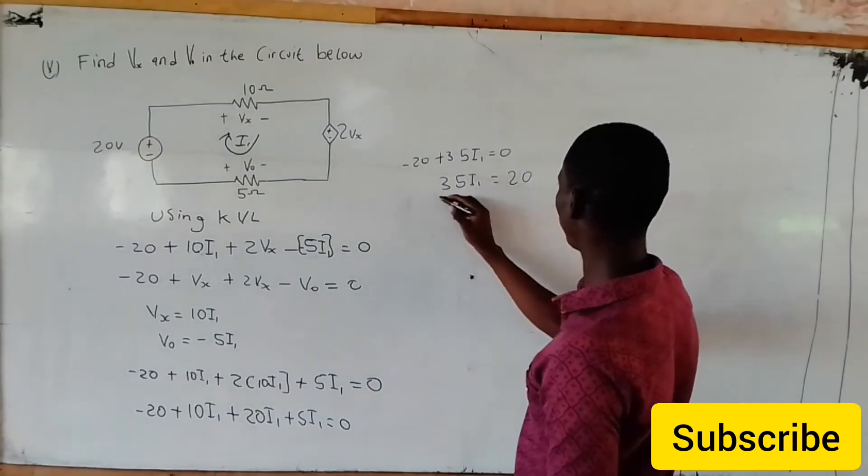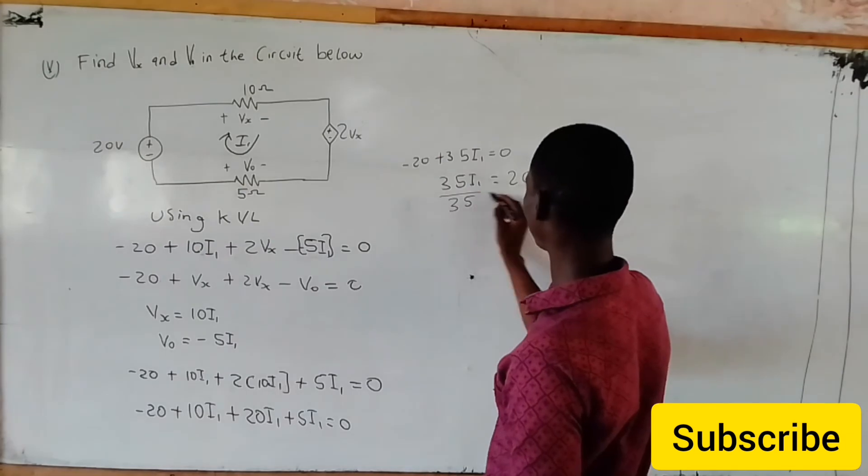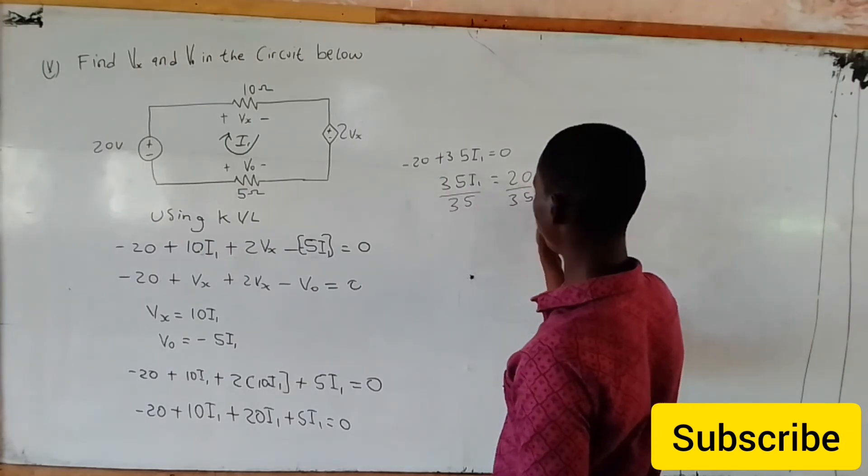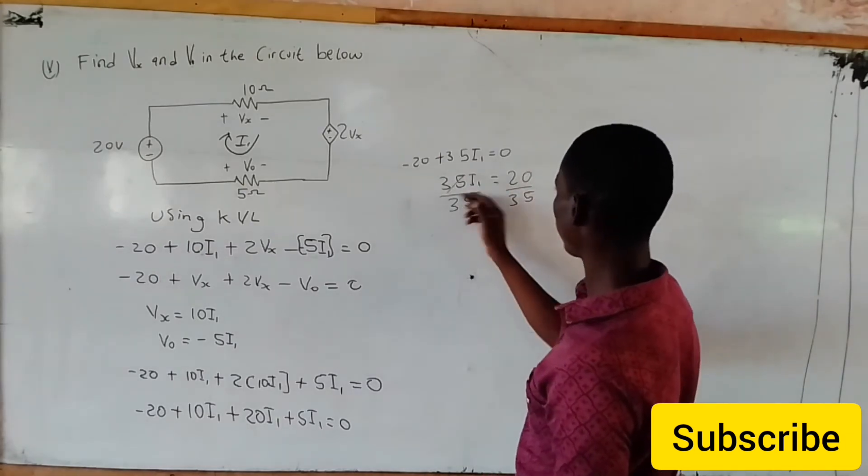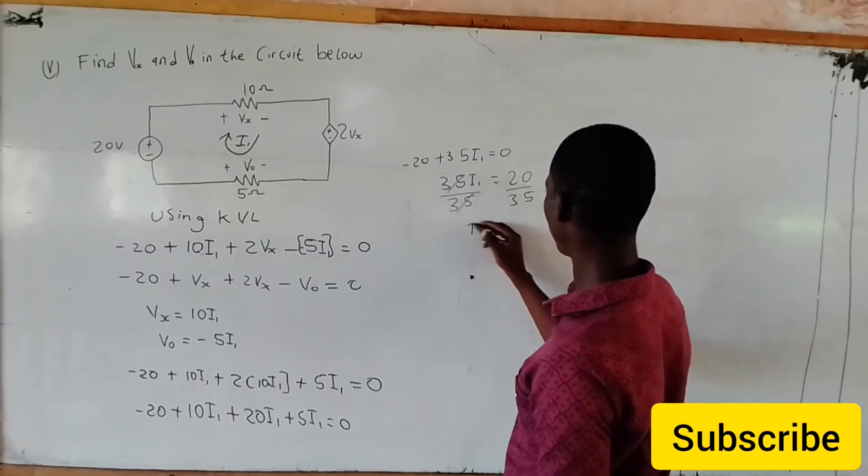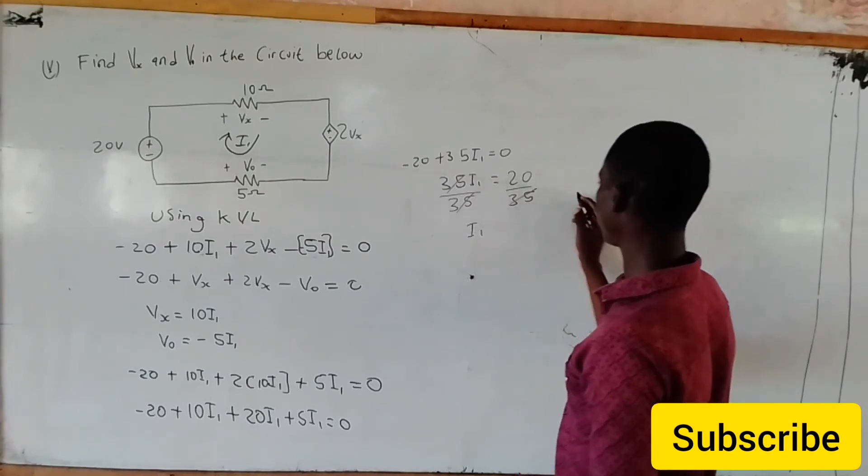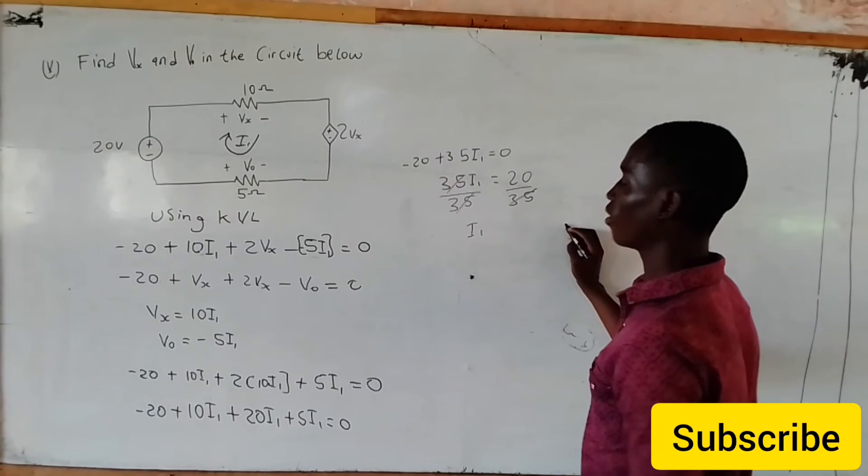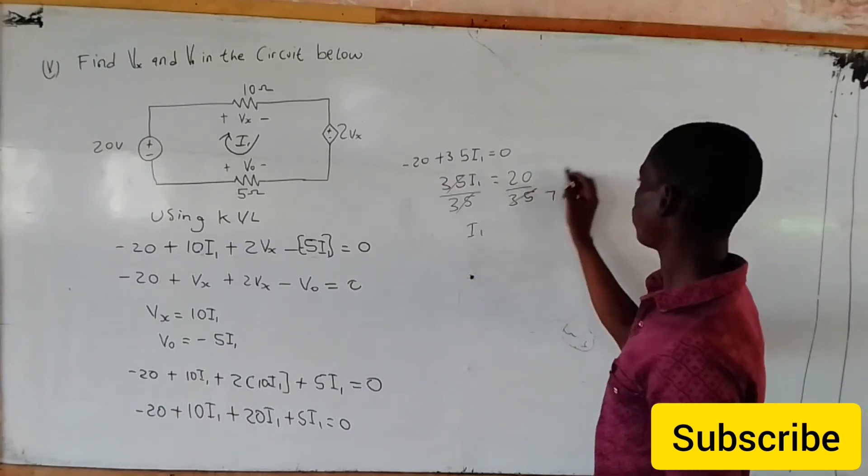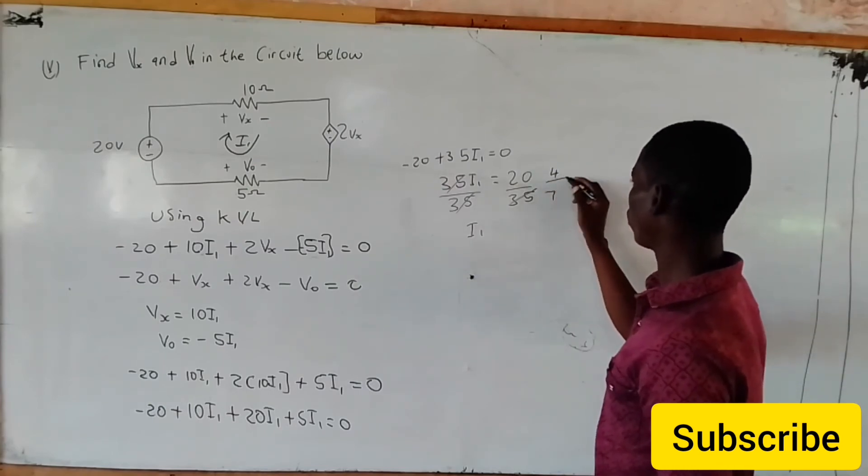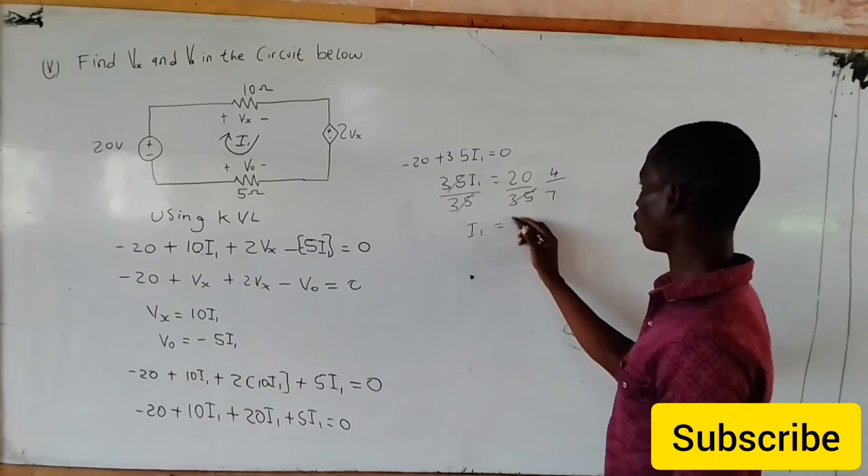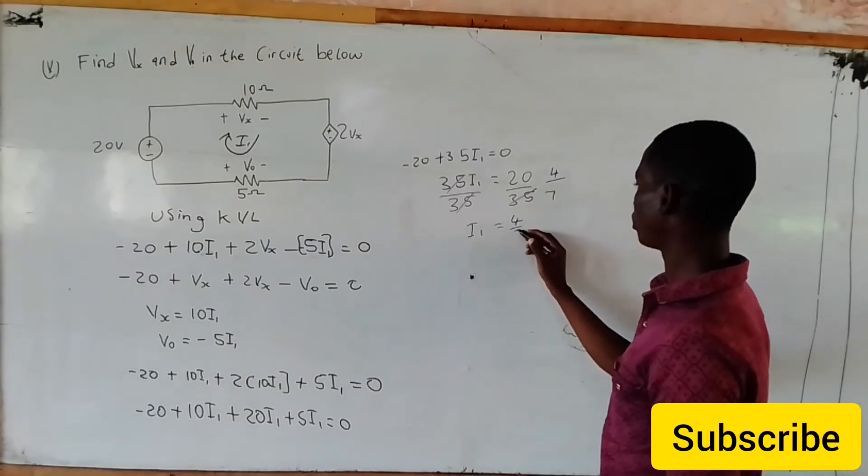We have 35I1 equals 20. Divide both sides by 35. 5 here will give us 7, 5 here will give us 4. So 4 over 7. I1 equals 4 over 7.